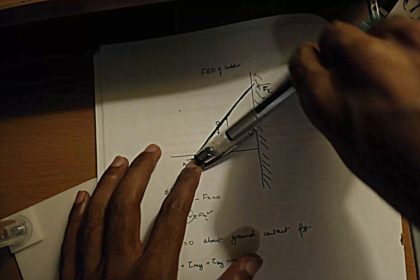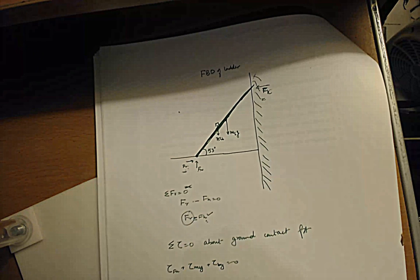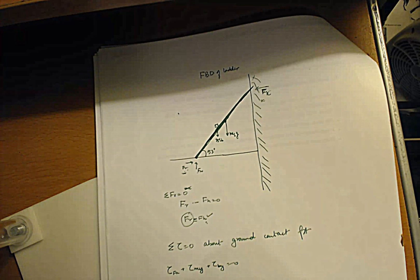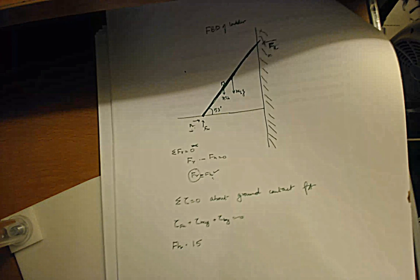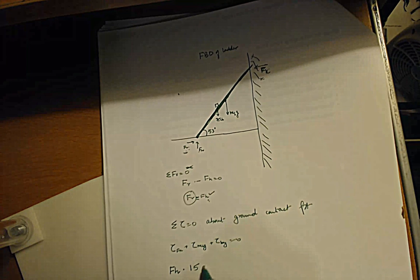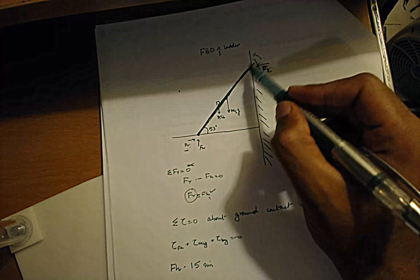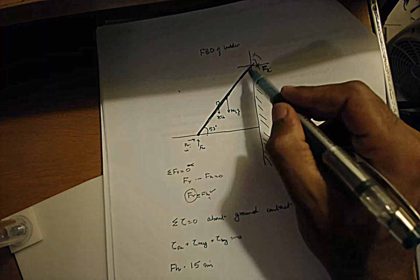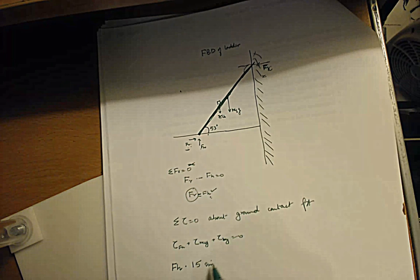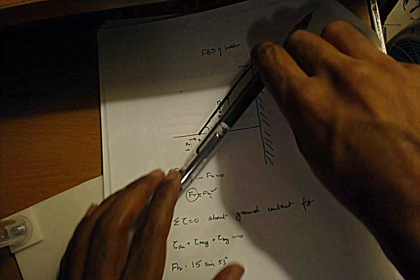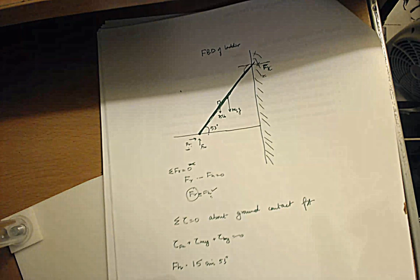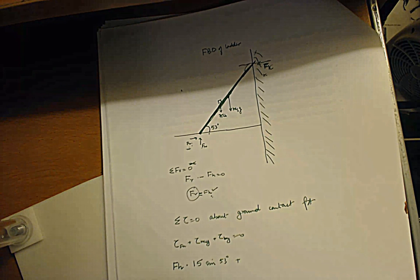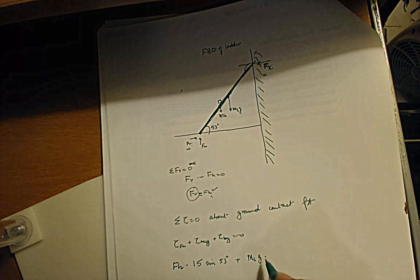This is the point about which we're rotating, and the length of the ladder is 15 feet. So the torque due to FH is FH times 15 times sine of the angle between the force and the ladder. Extending the force, that angle equals 53 degrees. FH is spinning the ladder counterclockwise, so it's positive: FH times 15 times sine 53.